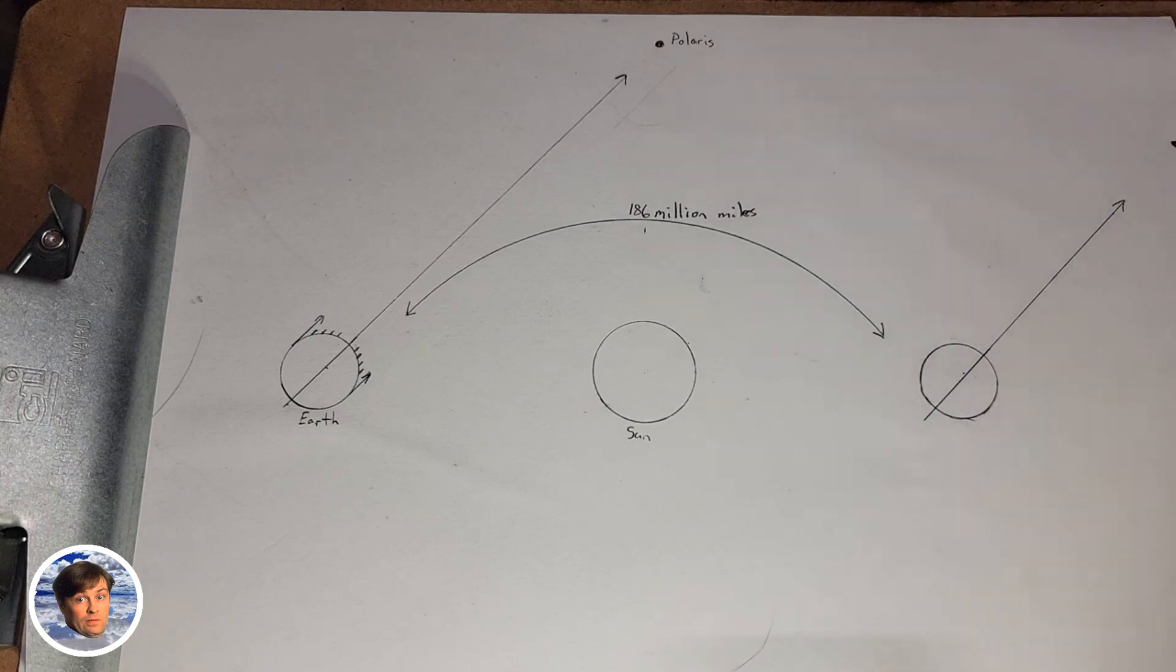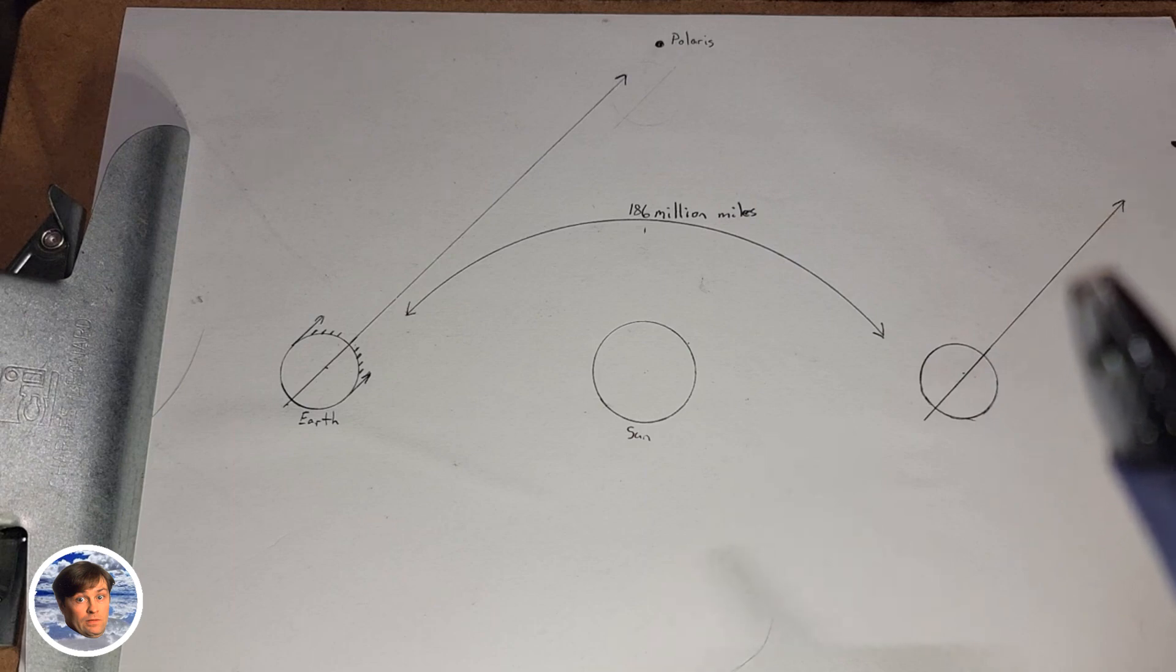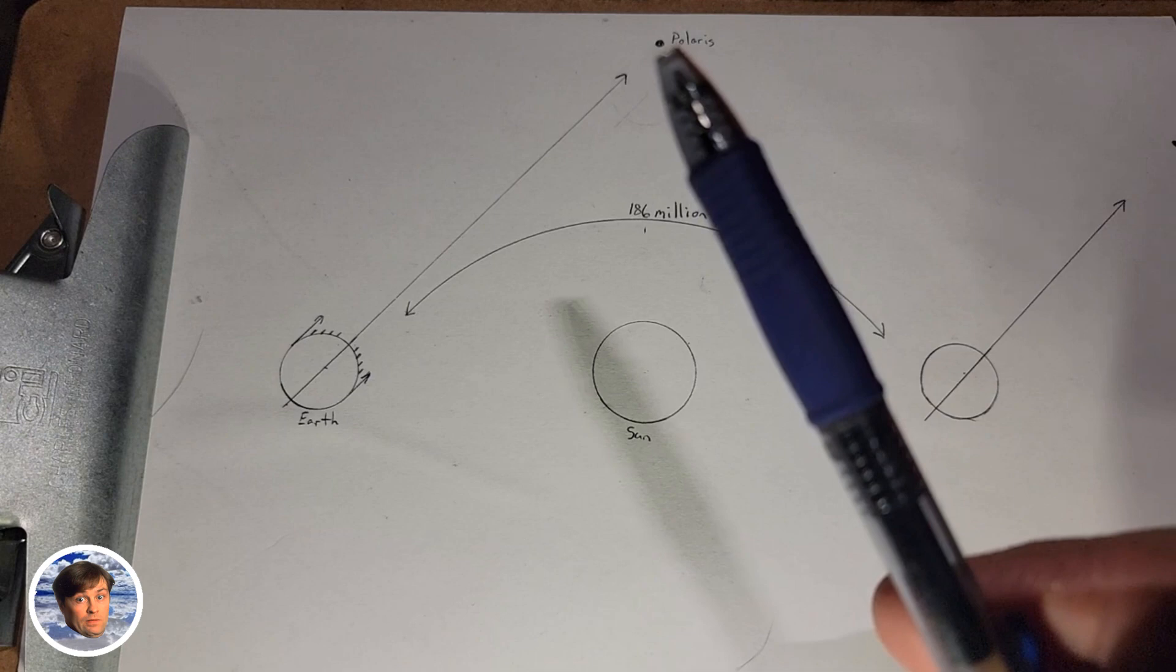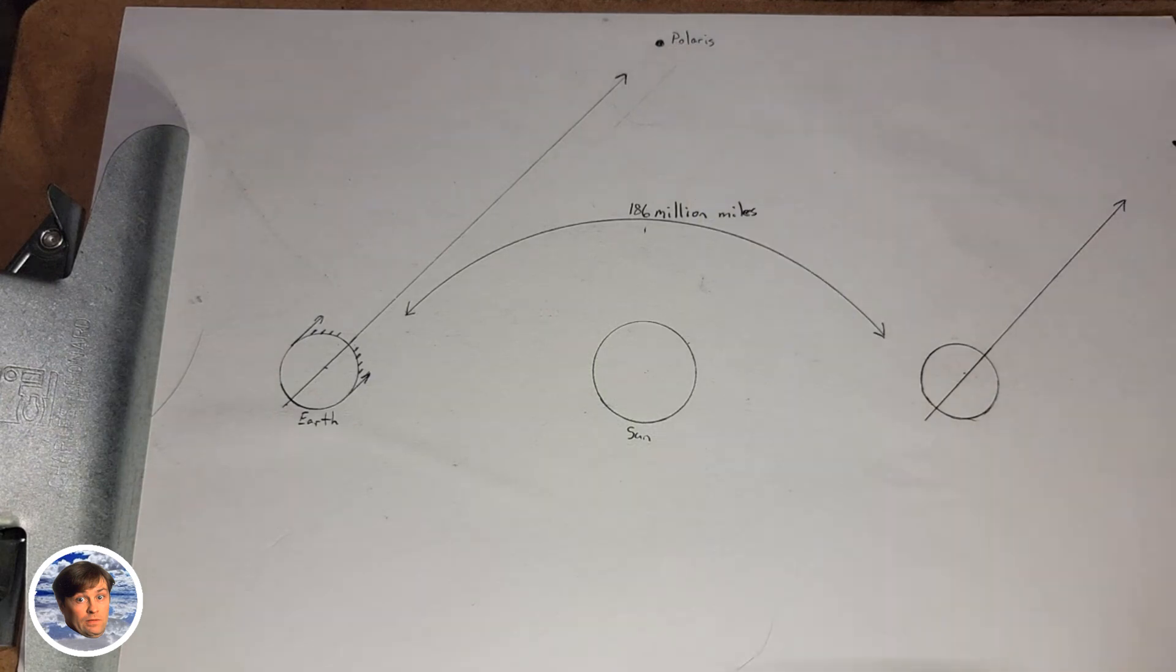So even if I put all their little lines to Polaris aimed at a 44 million mile diameter Polaris, it's not over here, it's over there. So that's an impossibility. The model for Polaris angles doesn't work on a globe orbiting the sun.